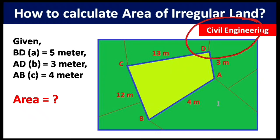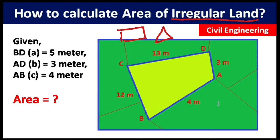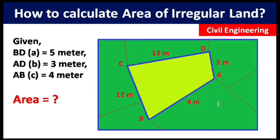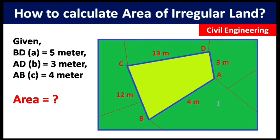Hello guys, welcome to the Civil Engineering YouTube channel. In this video we will talk about how to calculate the area of irregular land. Many students ask: I can calculate the area of rectangular land or triangular land, but how will we calculate the area of an irregular land — where all sides are different? For example, this land has sides of 4 m, 3 m, 13 m, and 12 m.